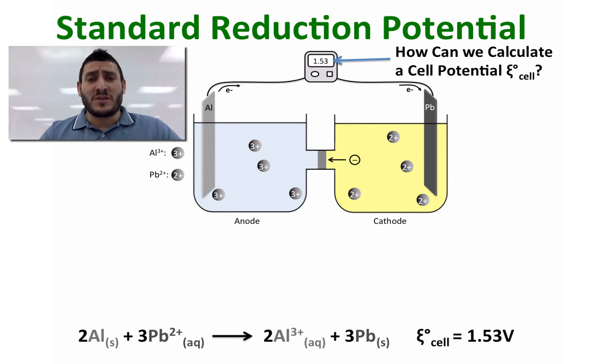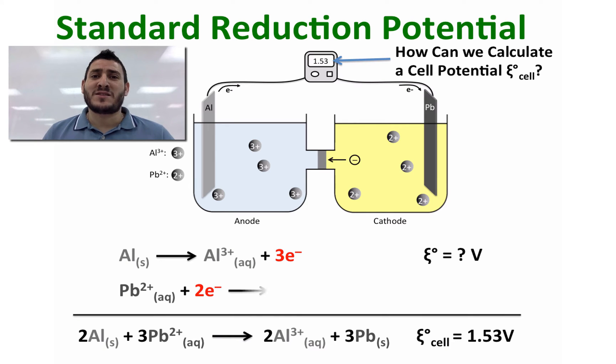Before answering this question, we need to discuss the standard reduction potential of half equations. As you know, the redox reaction is the sum of two half equations: the oxidation and the reduction. The cell potential is the potential energy of this reaction.